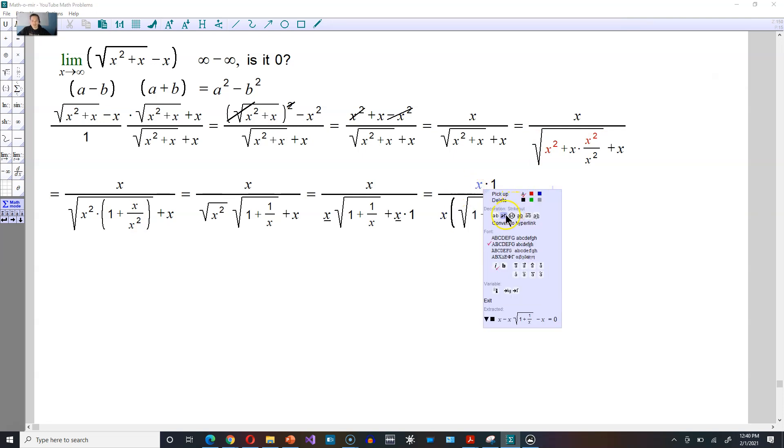Next you're going to take this and you're going to divide by this x right here. And then that's going to leave you here in the numerator of 1 and in the denominator you will have the square root of 1 plus 1 divided by x. And then here plus 1 this way.